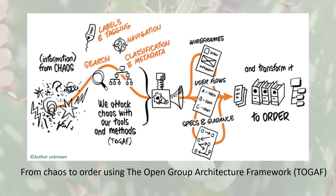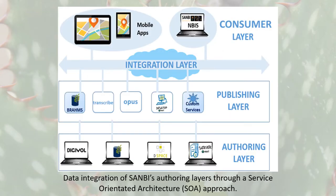Here we have a representation of how we use different tools and the TOGAF approach to organize and transform this chaotic information into ordered and structured data. This platform has been developed by integrating Sanbi's existing authoring layers through a service-oriented architecture approach. Some of these layers include the Botanical Database of Southern Africa, the Zoological Database of Southern Africa, and the Biodiversity Geographic Information System.